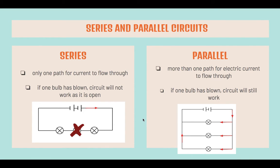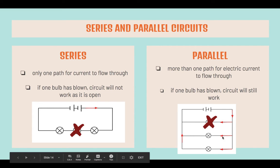A parallel circuit occurs when there is more than one path for electric current to flow through. If one bulb has blown, the circuit will still work and the two other bulbs will still light up.